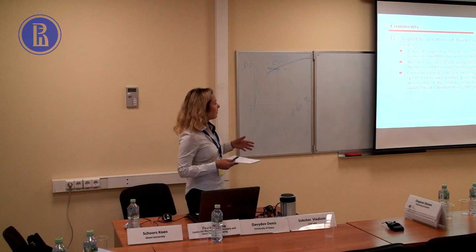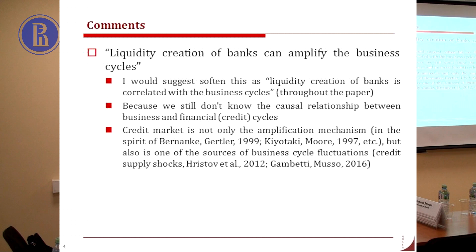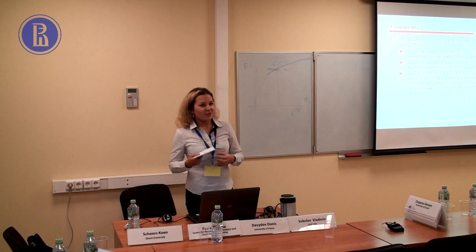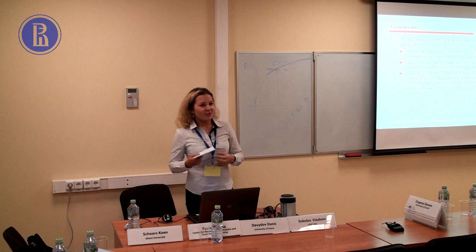Also, just a comment on the phrase: you point out that liquidity creation can amplify the business cycle. I would suggest softening this wording — perhaps saying that liquidity creation or bank lending is 'correlated with' or 'associated with' the business cycle, because you don't know the causal relationship. The endogeneity problem can't really be addressed here since you study macroeconomic data. If you had microeconomic data, you could identify credit market shocks and economic shocks separately. So be more cautious with the amplification language.